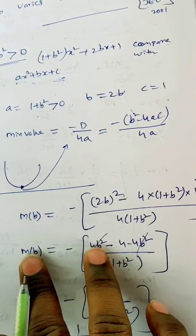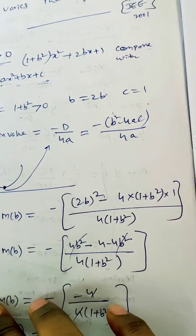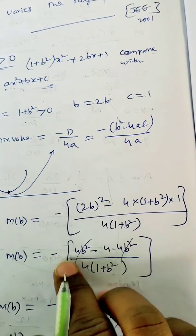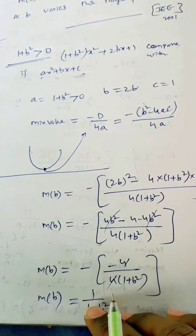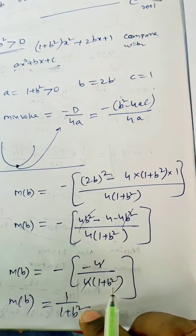If you square this, 4b² - 4 - 4b². 4b² minus 4, minus into minus is plus, 4 cancel. m(b) = 1/(1+b²).